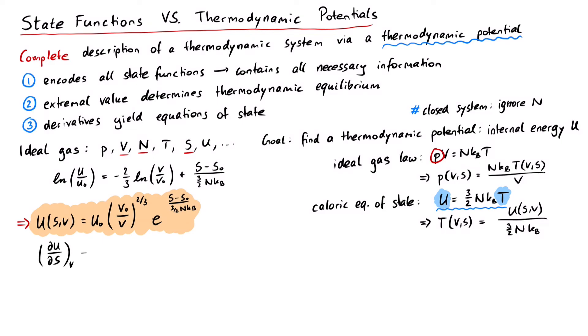First, we take the derivative of U with respect to S, while keeping V constant. All these terms here are exactly U again, so we get u over 3 halves nKB equals T. This is the caloric equation of state.